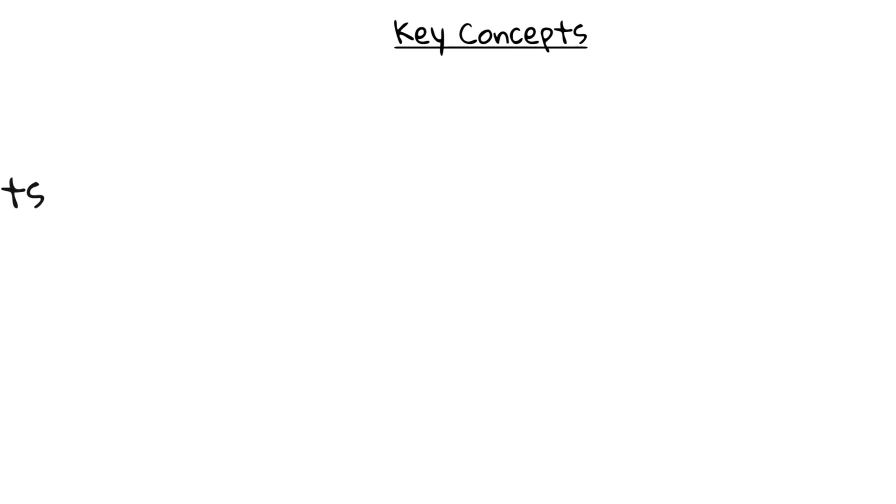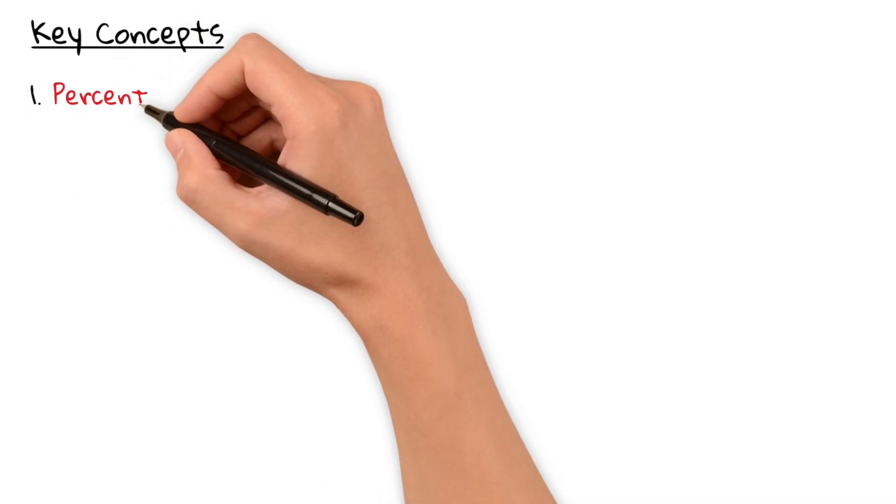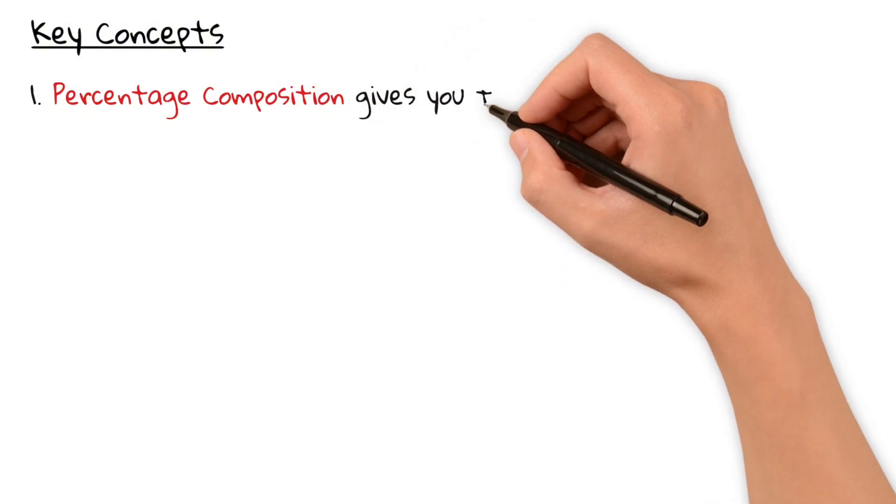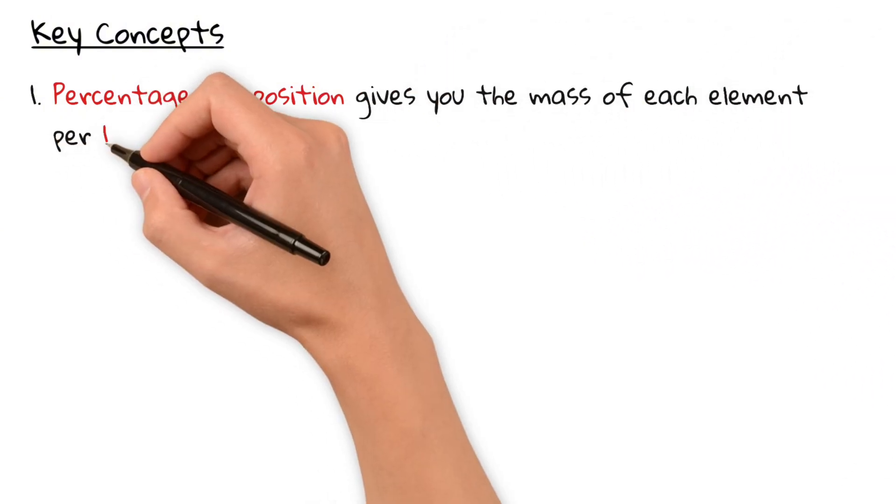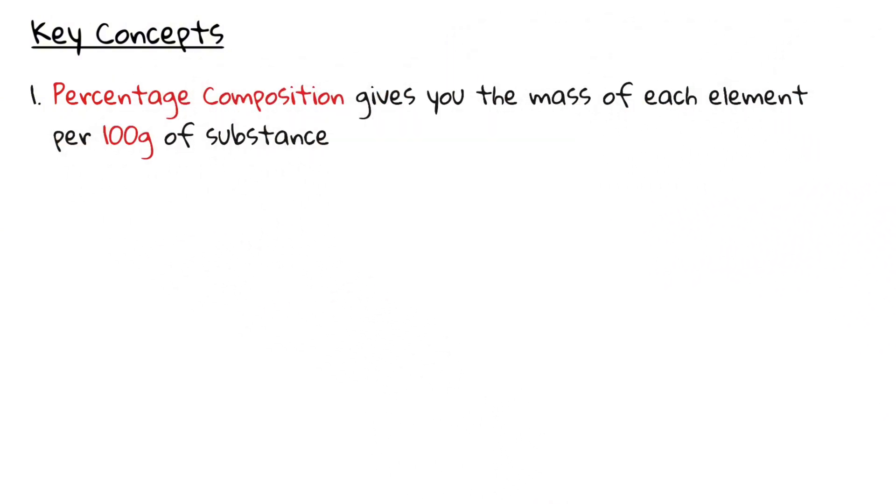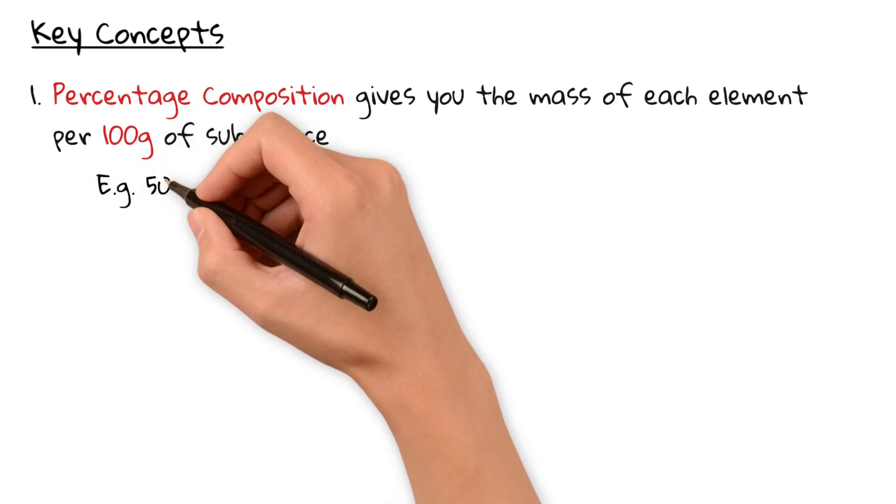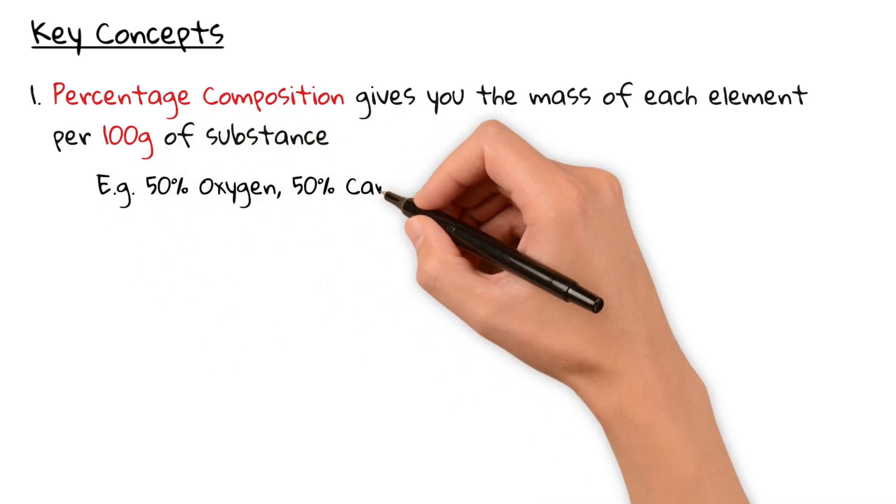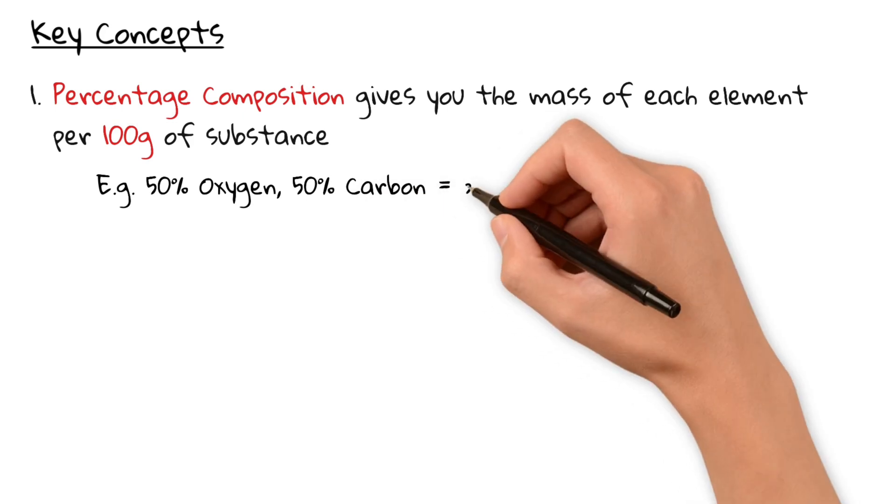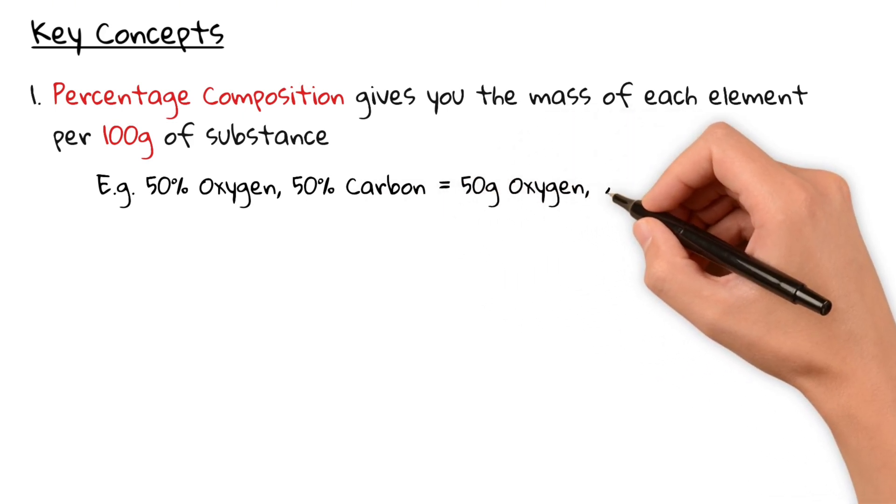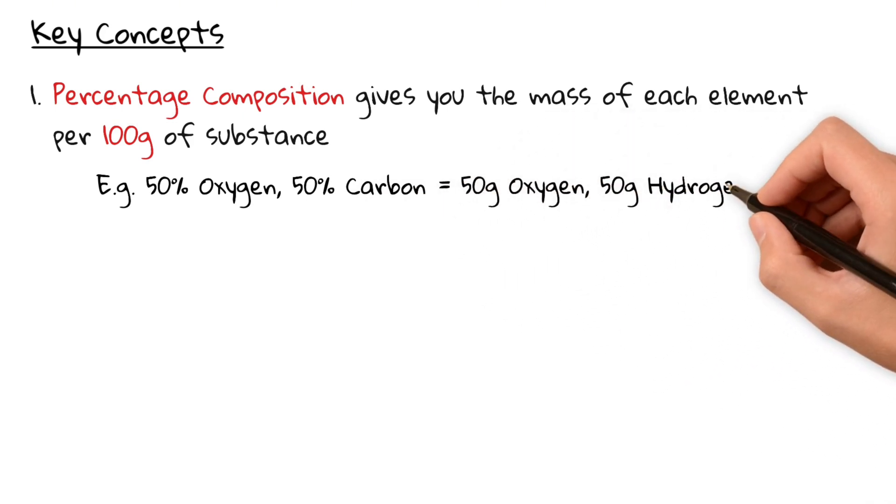Now, before we start solving problems, here are three things you must know. Firstly, percentage composition gives you the mass of each element per 100 grams of substance. So for example, if a compound would be made up of 50% oxygen and 50% carbon, you would simply assume 50 grams of oxygen and 50 grams of carbon.